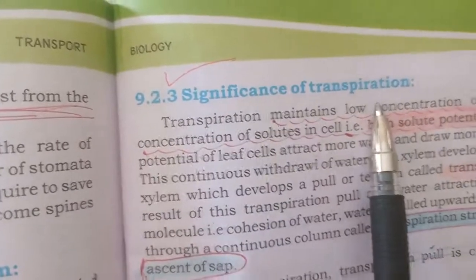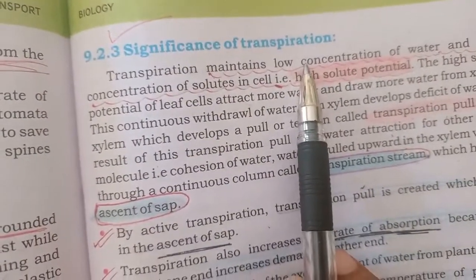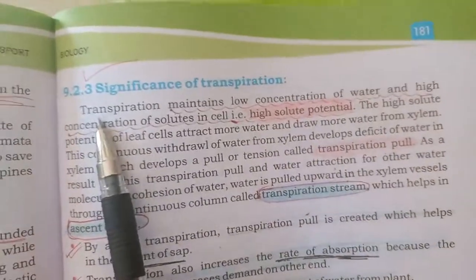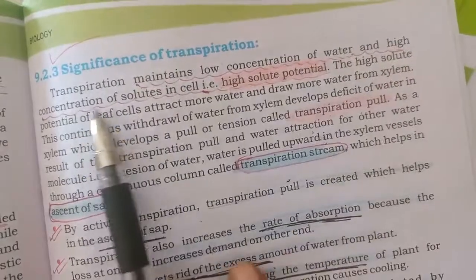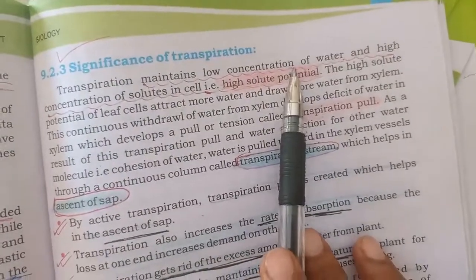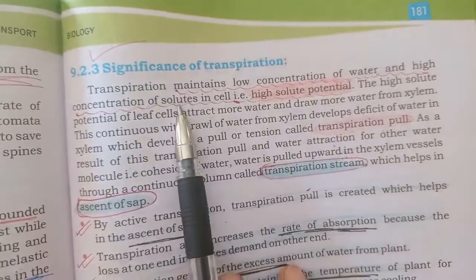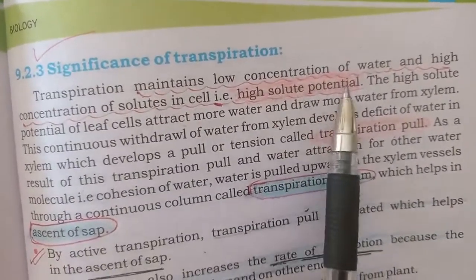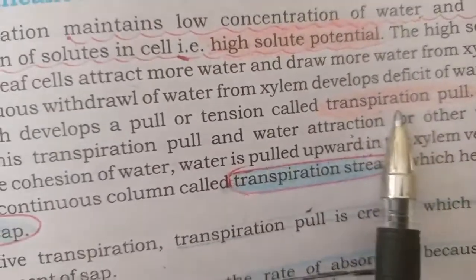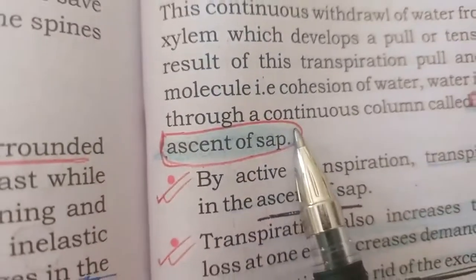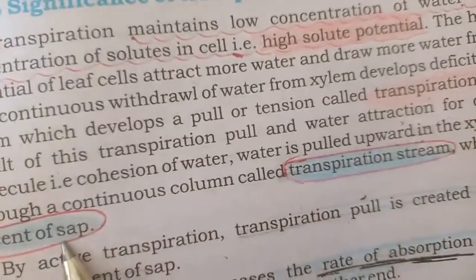Next topic is page number 181: what are the significance of transpiration؟ Transpiration کا plant کو کیا فائدہ ہو رہا ہے؟ Underline two lines: transpiration maintains low concentration of water and high concentration of solute in cell — that is a high solute potential. جتنی زیادہ transpiration ہوگی، plant سے پانی باہر نکلے گا، solute کی concentration زیادہ ہو جائے گی — یعنی high solute potential — اور اس کی وجہ سے transpiration pull بنے گا اور ascent of sap ہوگا۔